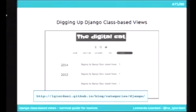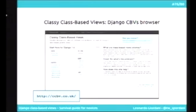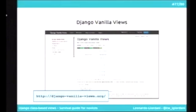Some online resources: my blog has three posts I wrote about class-based views, where you can recap what I told you today in a more relaxed way. The class-based views browser is a very important and useful tool — it simply lists Django generic class-based views and allows you to navigate and browse them. Django Vanilla Views is a very interesting project that aims to reimplement the class-based view hierarchy in a smaller, plainer form, and it's worth using or trying.